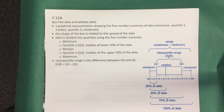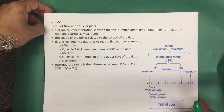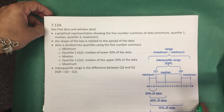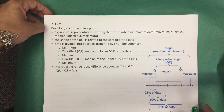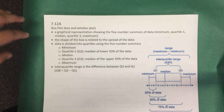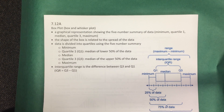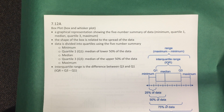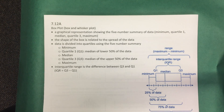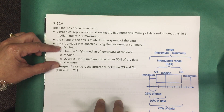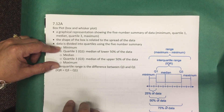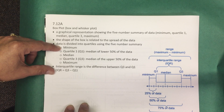Now let's look at a box plot. A box plot is sometimes also referred to as a box and whisker plot. It is a graphical representation showing the five-number summary of data. The shape of the box is related to the spread of the data, and the data is divided into quartiles using the five-number summary.